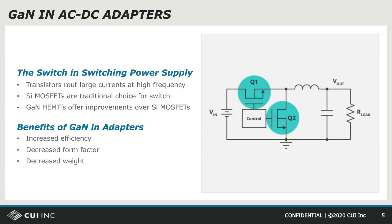So where will you find GaN in a power supply? Power adapters and other switching power supplies convert power using semiconductor switches, most commonly in the form of silicon MOSFETs. These switches must conduct large amounts of current at high frequencies, and because of this, are one of the main contributors to power loss and heat generation inside a power supply. Manufacturers are always looking for better switches to make their power supplies smaller, lighter, and more efficient. Traditionally, improvements to efficiency would come incrementally through technological improvements to MOSFETs. However, there is a physical limit to these improvements, and MOSFET manufacturers are quickly approaching it. GaN HEMTs offer a big improvement in performance over silicon in key areas that enable improvements to efficiency and form factor over conventional silicon MOSFETs, and their relative newness means they have a lot of room to improve.